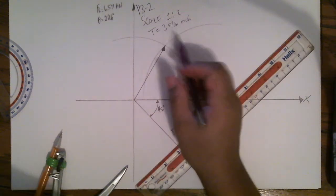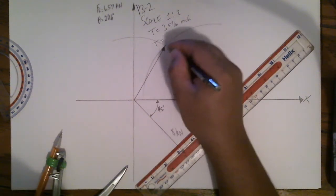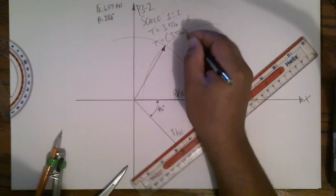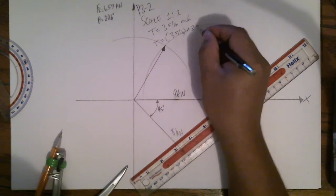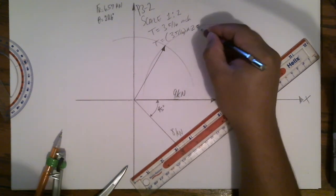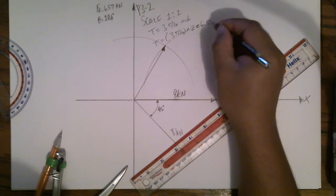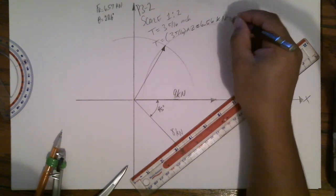So using the scale, T is equal to 3 5 sixteenths times 2. That's approximately 6.56 kilonewtons.